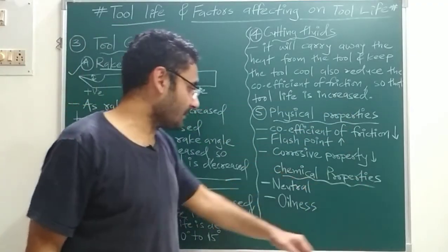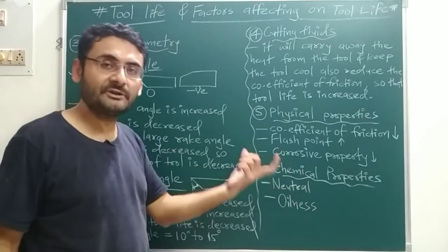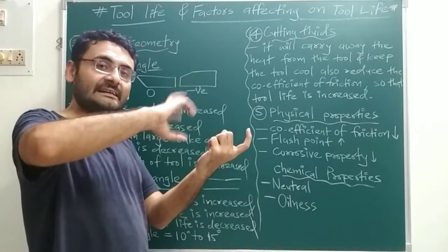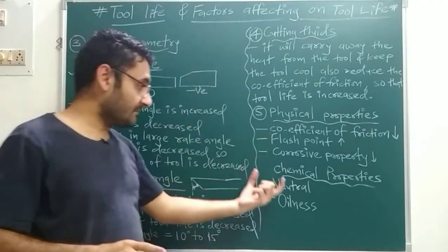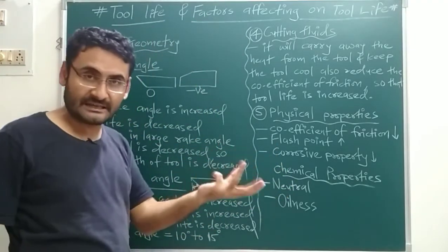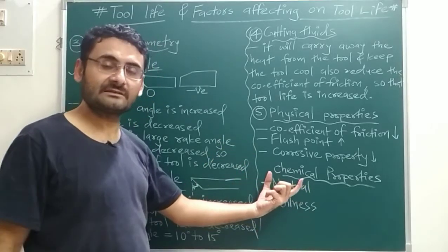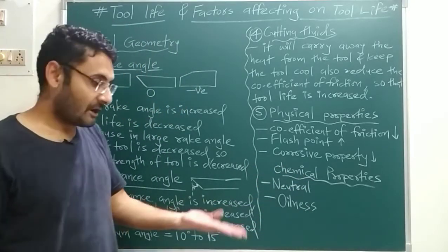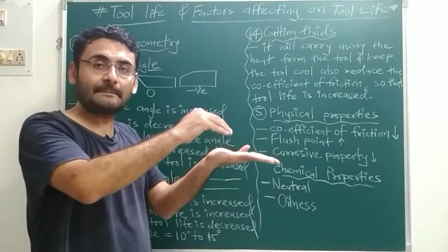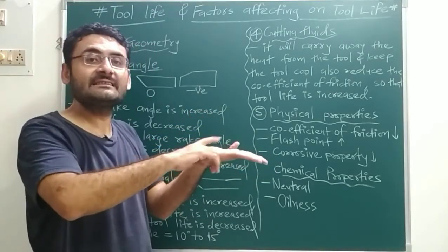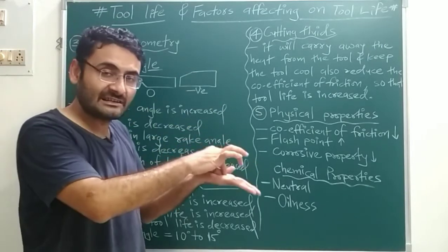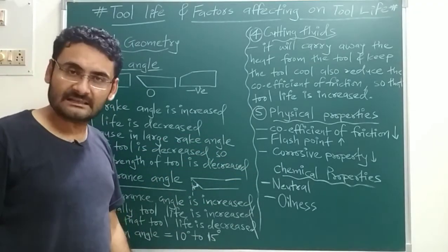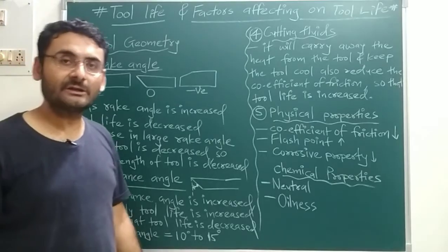Another physical property is corrosion resistance — corrosive property should be low so that tool life is more. For chemical properties: first, the tool material should be chemically neutral, meaning it should not react with the environment or air. If it reacts with air, oxidation occurs causing corrosion and reducing tool life. Second, oiliness of the tool must be very low — if oiliness is high, chips on the tool surface cannot be easily removed, damaging the tool surface and reducing tool life.